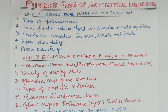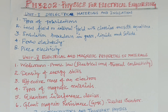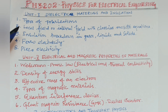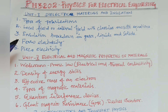Let's talk about the 16 marks in PH3202. In the first unit, Unit 1 is Dielectric Materials and Insulations. The types of Polarization, or Mechanism of Polarization — there are 4 types: Electronic, Ionic, Space Charge, and Orientation Polarization. This is the most important question.